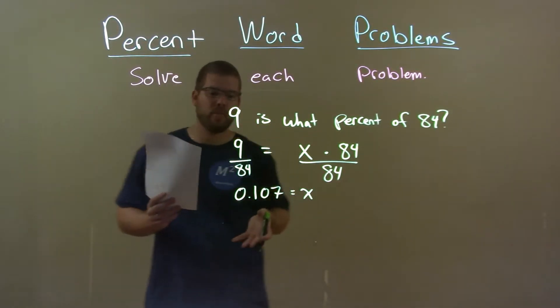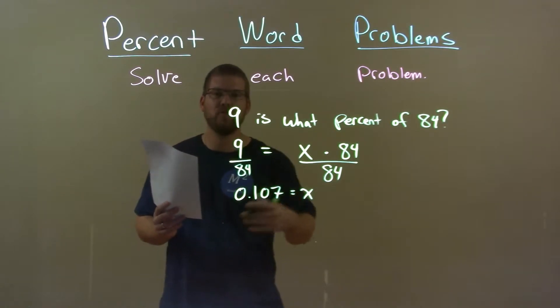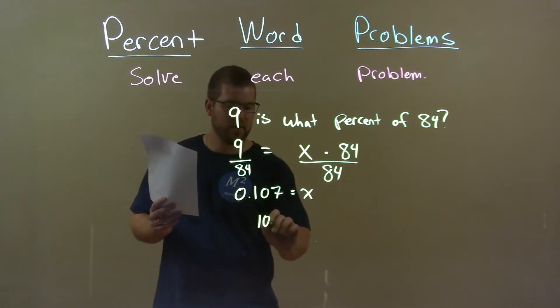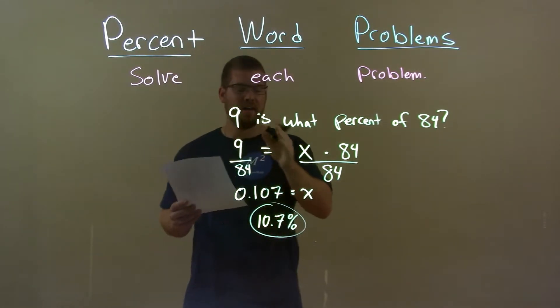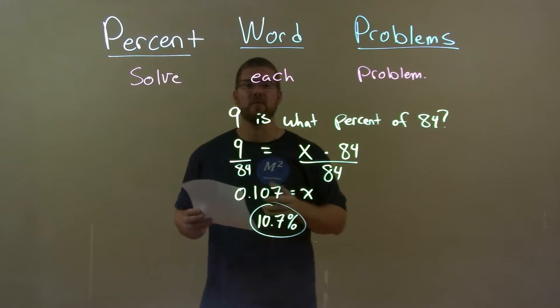To convert that to a percent, move the decimal place two spots to the right. We have 10.7% here, and there is our final answer. 9 is 10.7% of 84.